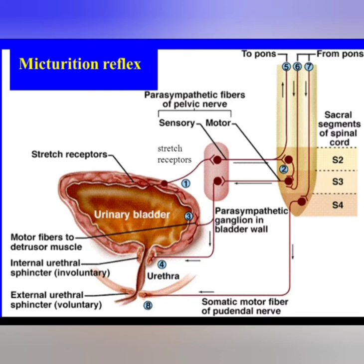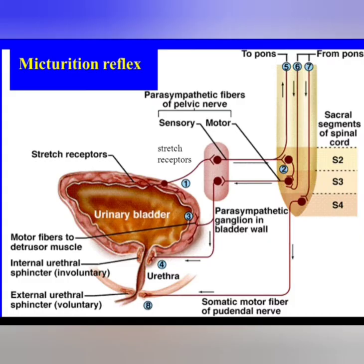Efferent signals then return to the bladder from the spinal cord through the parasympathetic fibers in the pelvic nerve. The efferent signals excite the detrusor muscle and relax the internal urethral sphincter. This is when urine is voided involuntarily.